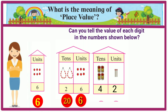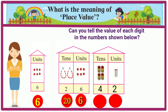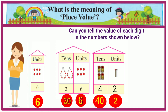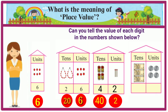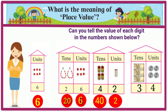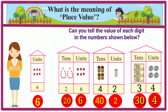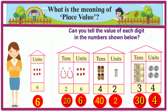In the number 42, 4 is in the tens place. When we open 4 tens bundles we get 40 units. Therefore, in the number 42, the place value of 4 is 40. In the number 34, 3 is in the tens place. When we open 3 tens bundles we get 30 units. Therefore, in the number 34, the place value of 3 is 30 and in the units place its place value is 4.